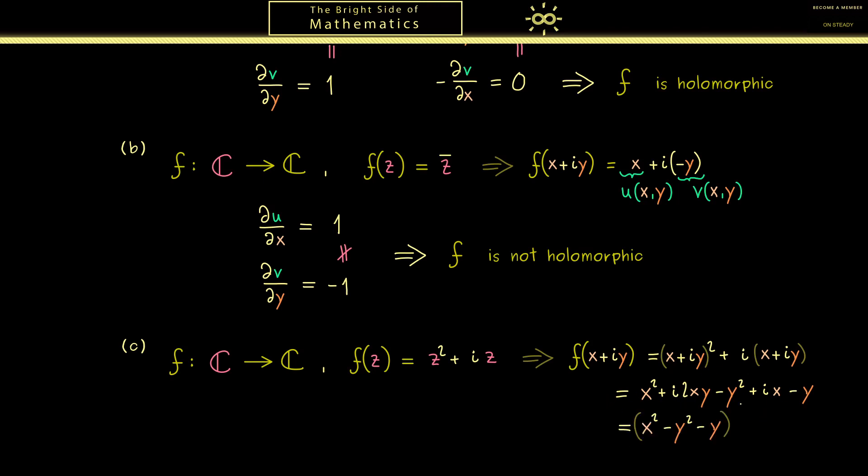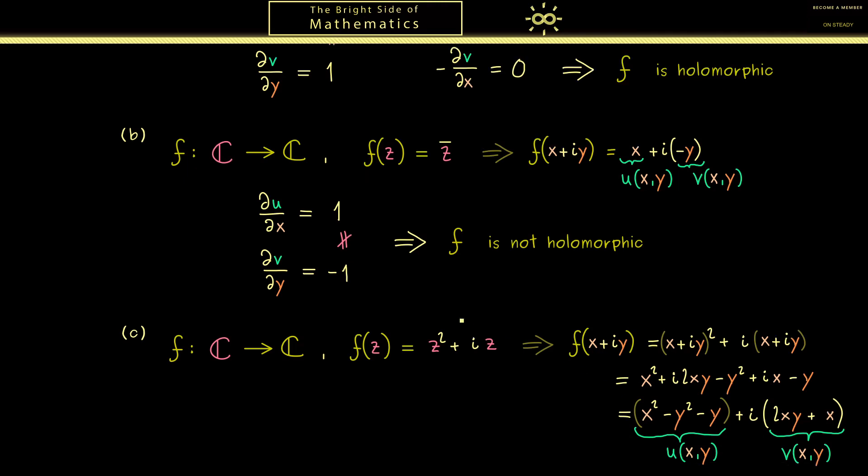So the real part is everything without an i and for the imaginary part I factor out one i. And then we have the result we wanted. Because again here we have our function u and there we have the function v. Now with these two functions we can check the Cauchy-Riemann equations again.